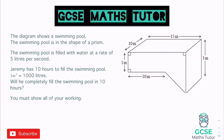The diagram shows a swimming pool in the shape of a prism. The swimming pool is filled with water at a rate of 5 litres per second. Jeremy has 10 hours to fill the swimming pool, and 1 metre cubed is 1,000 litres. Will he completely fill the swimming pool in 10 hours? There are quite a few different ways to approach this question, so we'll discuss them. But with this type of question, we need to think about what we actually need to work out.